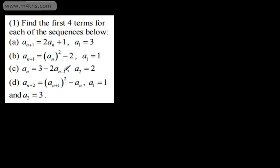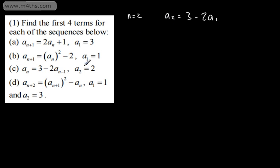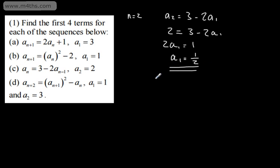For part c, a sub n is equal to 3 minus 2 a sub n minus 1, and we're given that a2 is equal to 2. This one is slightly more challenging — we have n, n minus 1, and the second term is given, so we need to find the first term. If we let n equal to 2, a2 equals 3 minus 2a1. Substituting a2 equals 2 gives us 2 equals 3 minus 2a1, so 2a1 equals 1, meaning a1 equals one half.